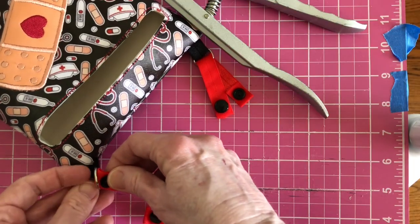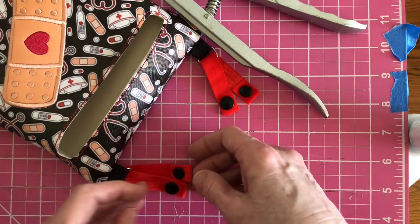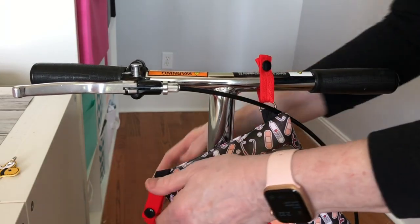When your straps are completed, slide the straps through the D-rings on the pouch then snap onto the scooter handlebars.